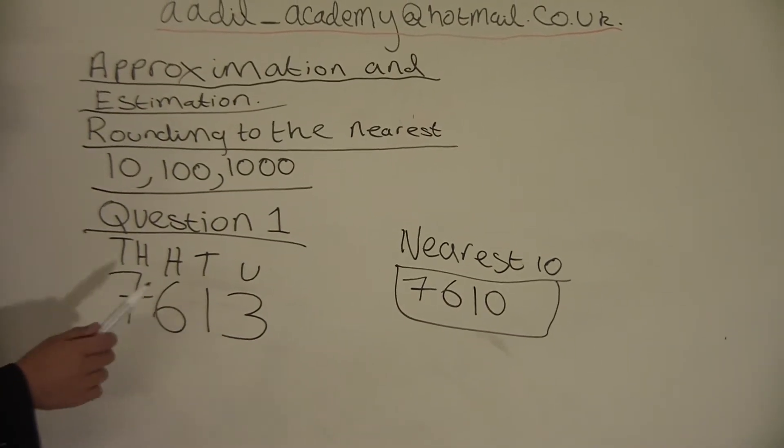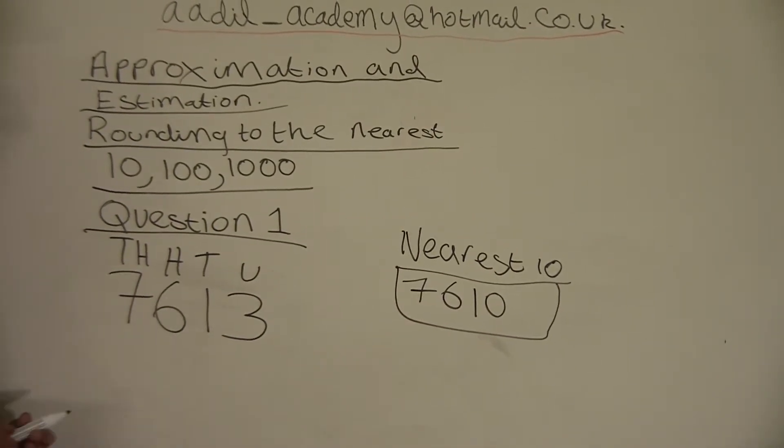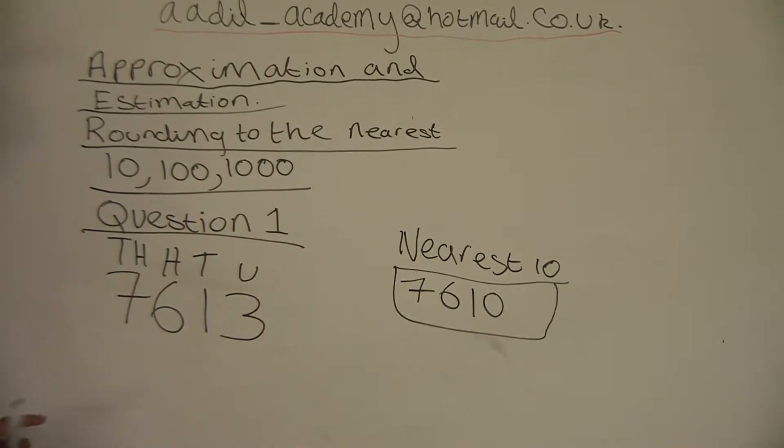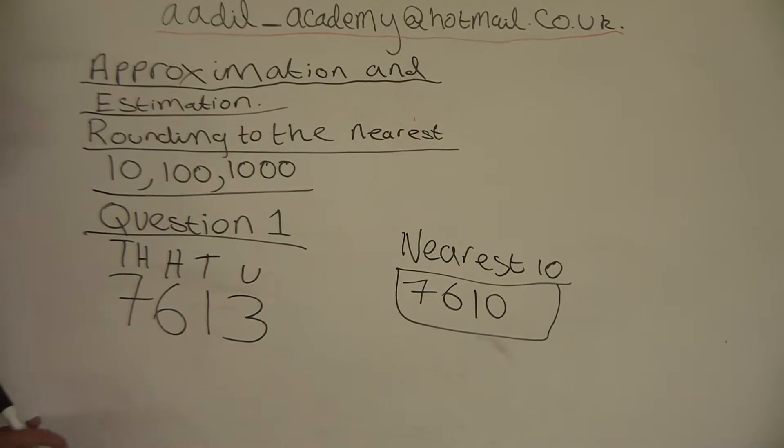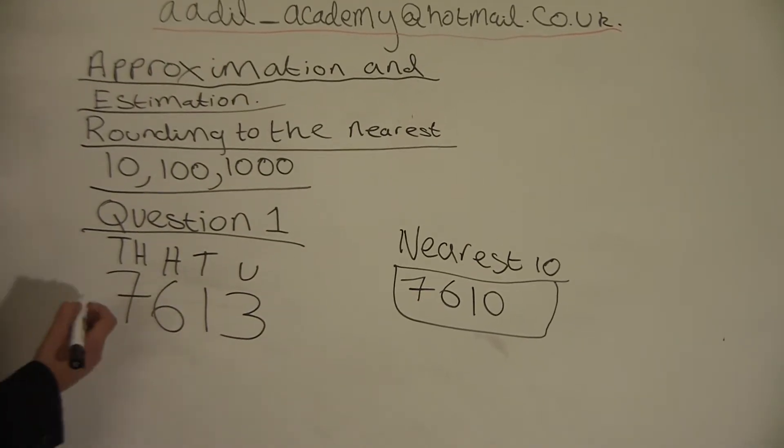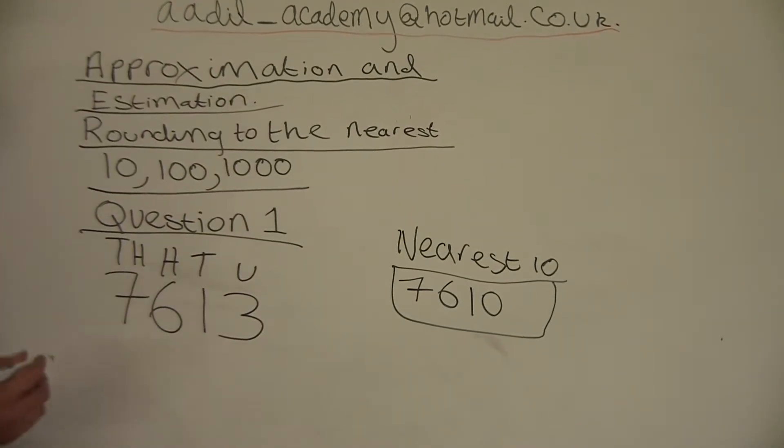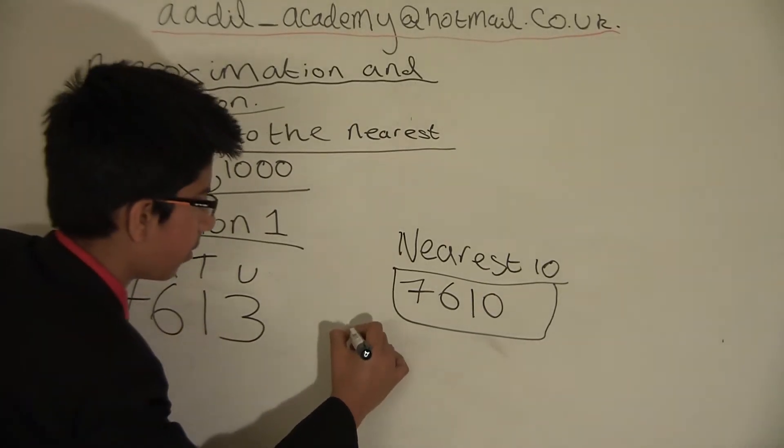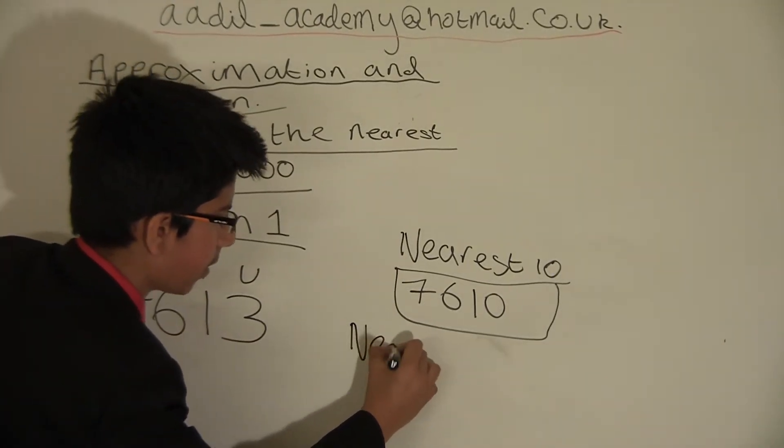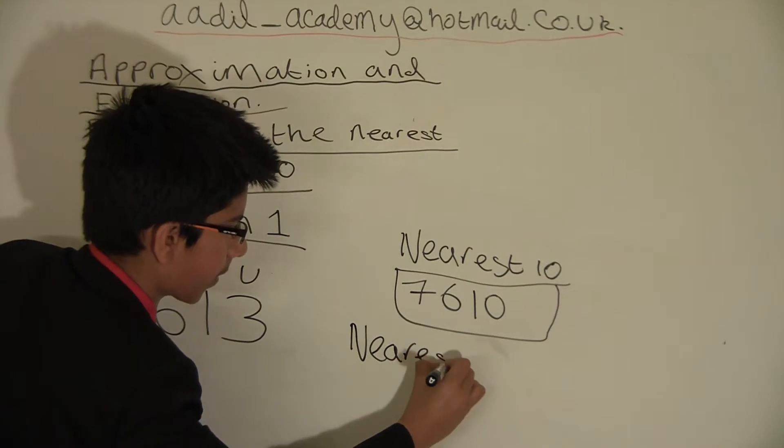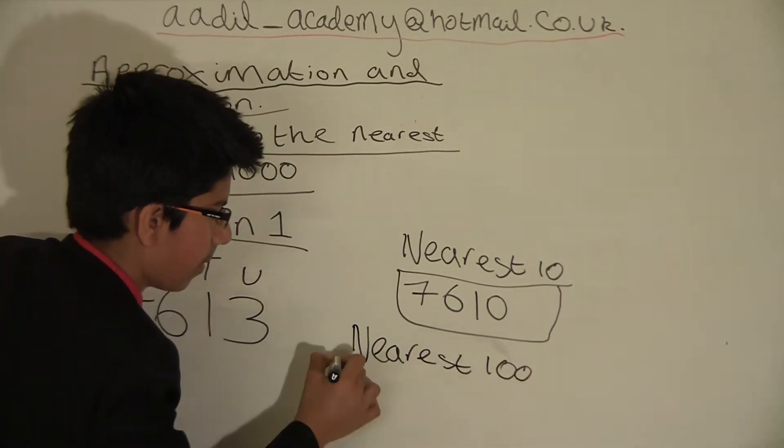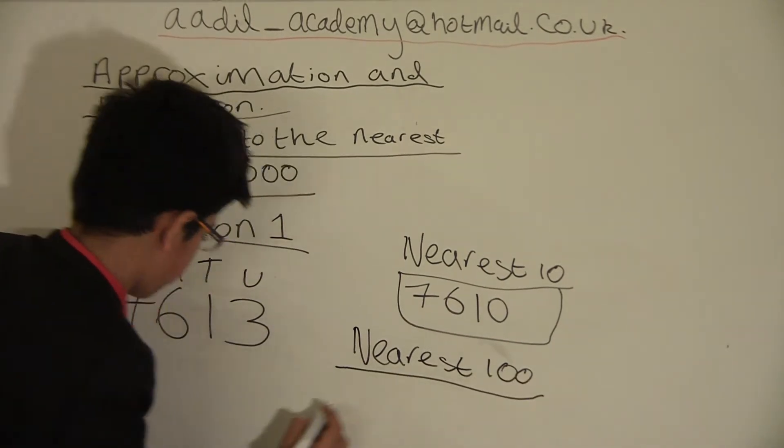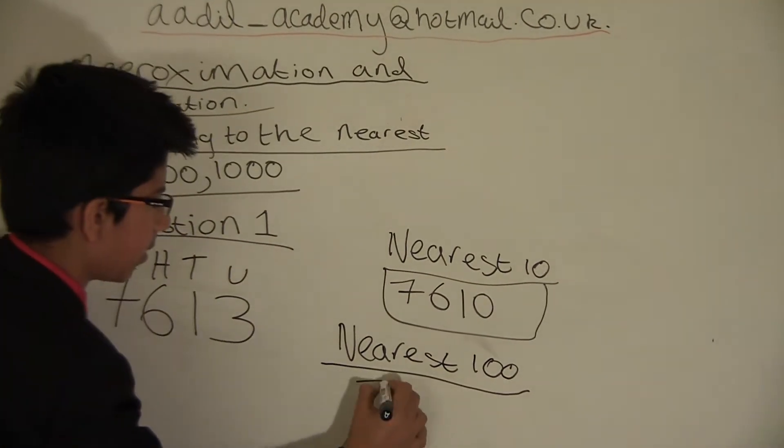When we round down to find the nearest hundred, we get 7600. Nearest hundred is 7600.